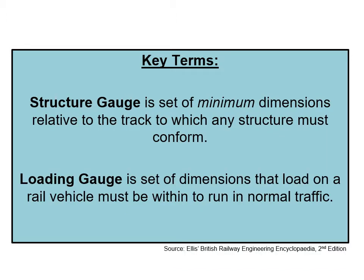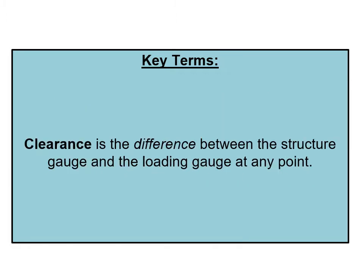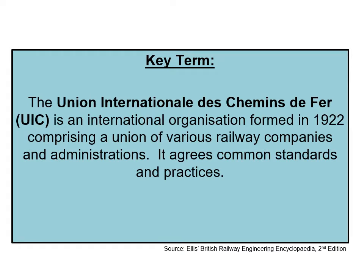Track Gauge is used to keep the rails a set distance apart to minimise wear and maintain vehicle stability. The Structure Gauge is a set of minimum dimensions relative to the track to which any structure must conform. The Loading Gauge is a set of dimensions that a load on a rail vehicle must be within to run in normal traffic. Clearance is the difference between the Structure Gauge and the Loading Gauge at any point. The UIC is an international organisation, a union of various railway companies and administrations, which agrees common standards and practices.